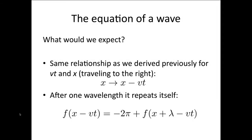What we're going to do now is derive an equation to describe the wave. Let's think about what we would expect for this wave equation. Well, first of all, we'd expect the same relationship as we derived previously for vt and x. So if it's traveling to the right, then x becomes x minus vt. Now, we'd also expect the wave to repeat itself after one wavelength. We said that the general form for a wave was a sine function. So we're going to be taking the sine of some function of x minus vt. This function — the f of x minus vt — is going to give some answer in radians.